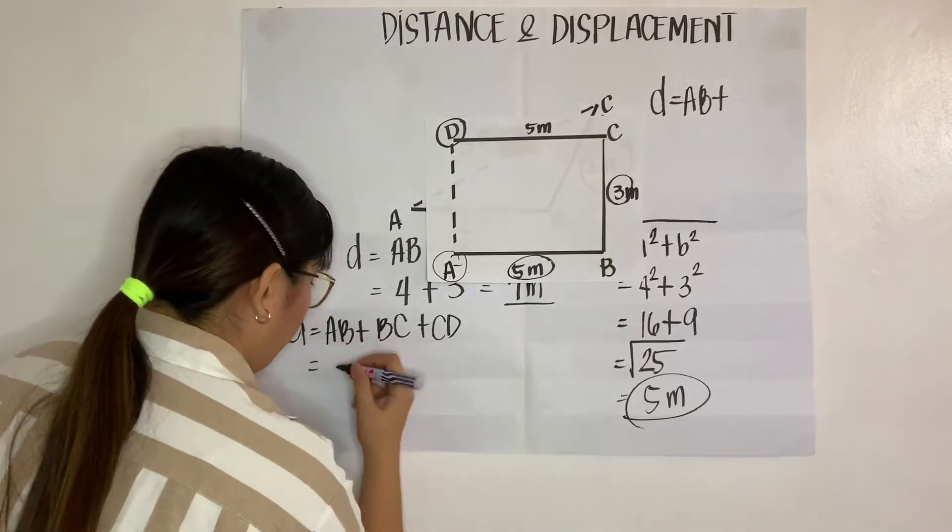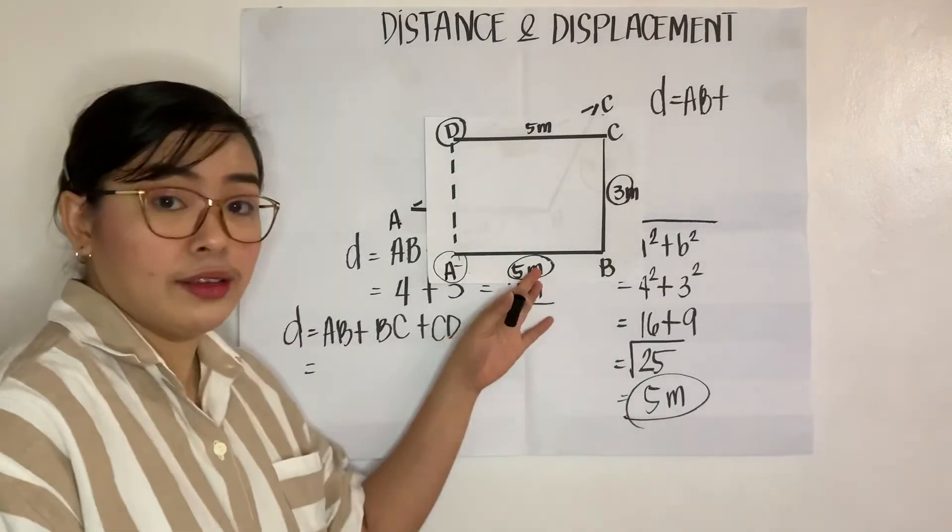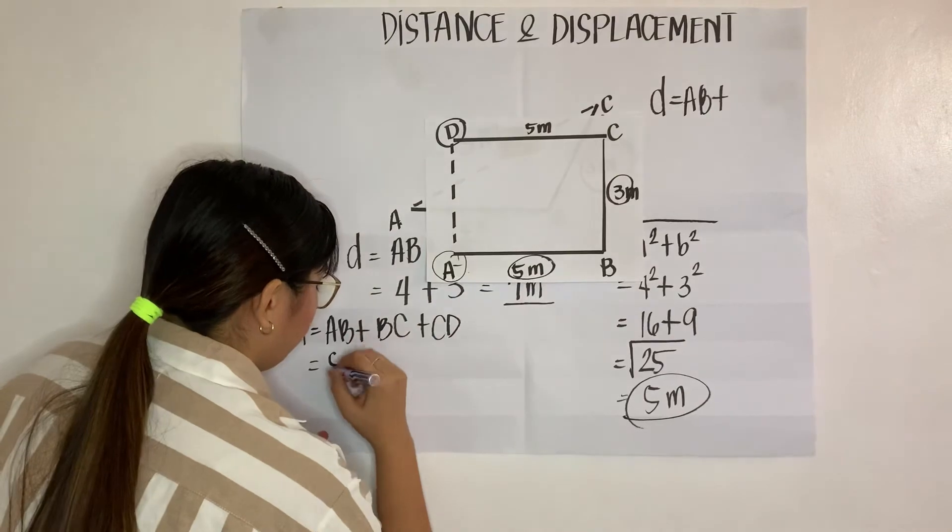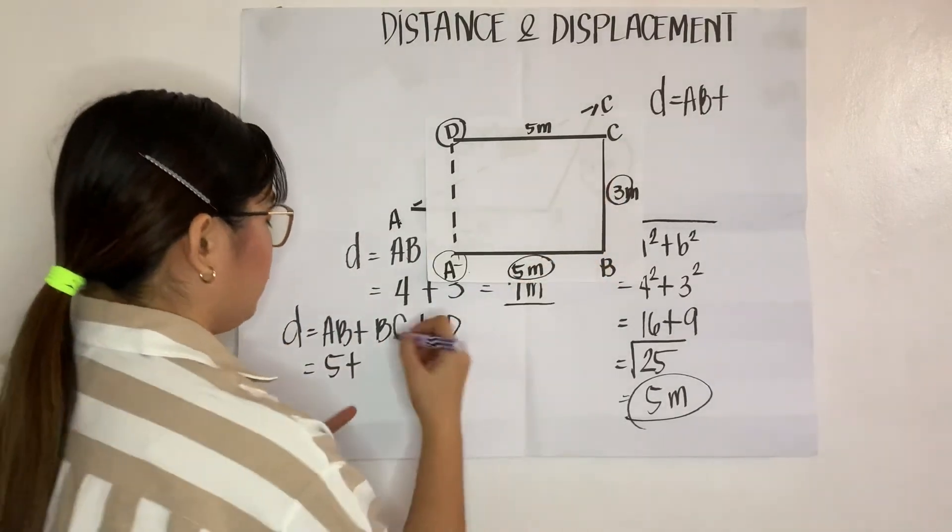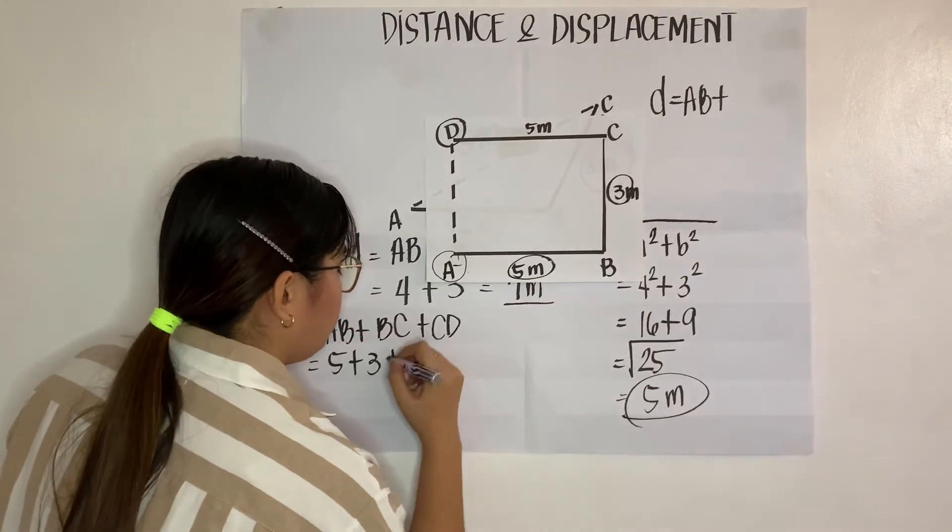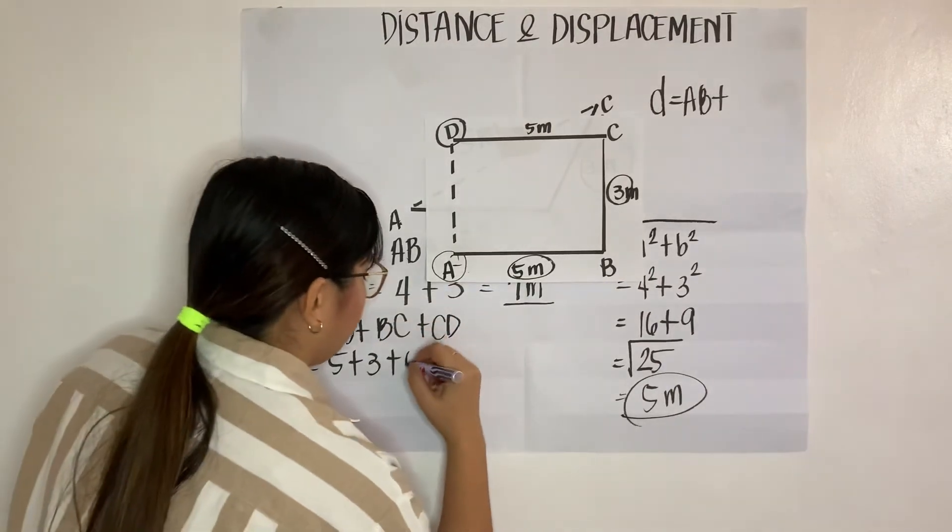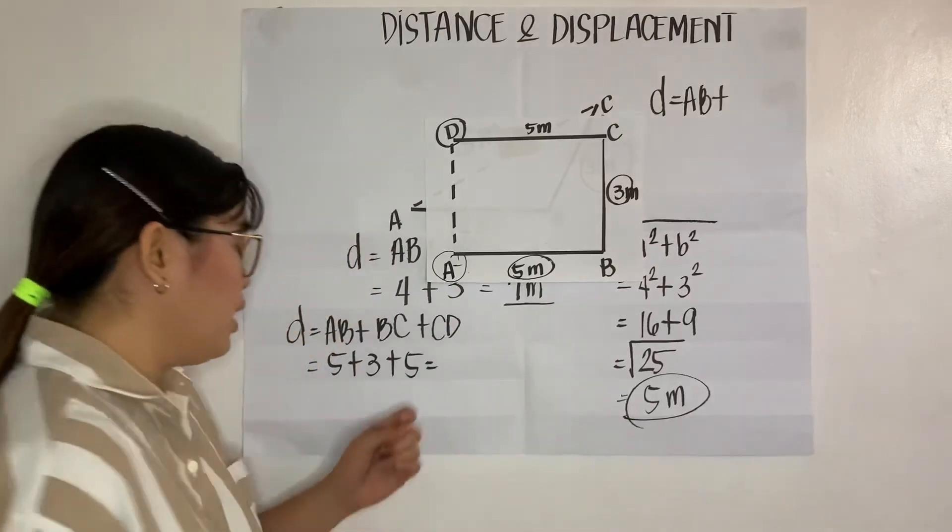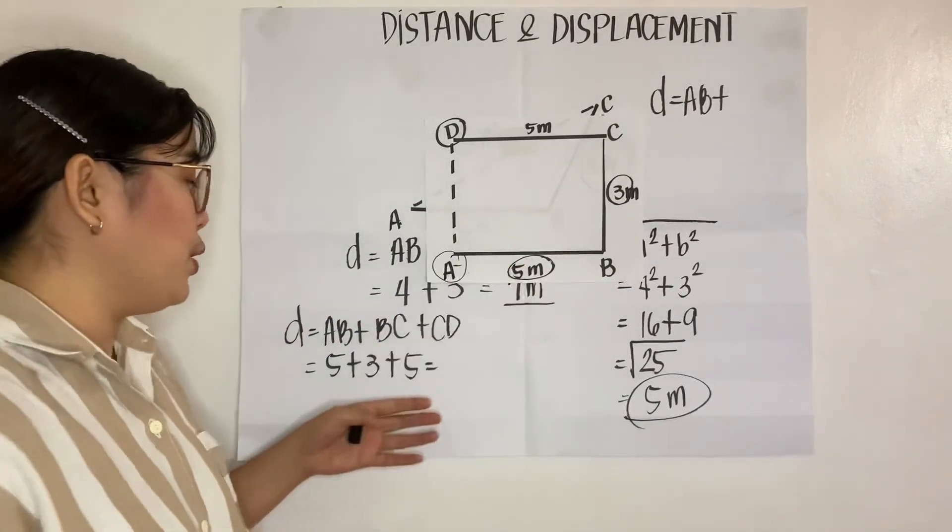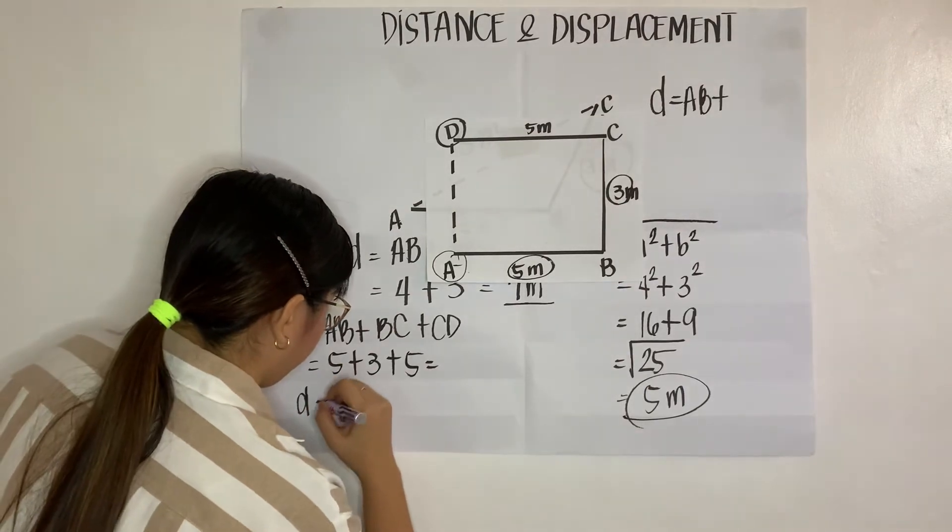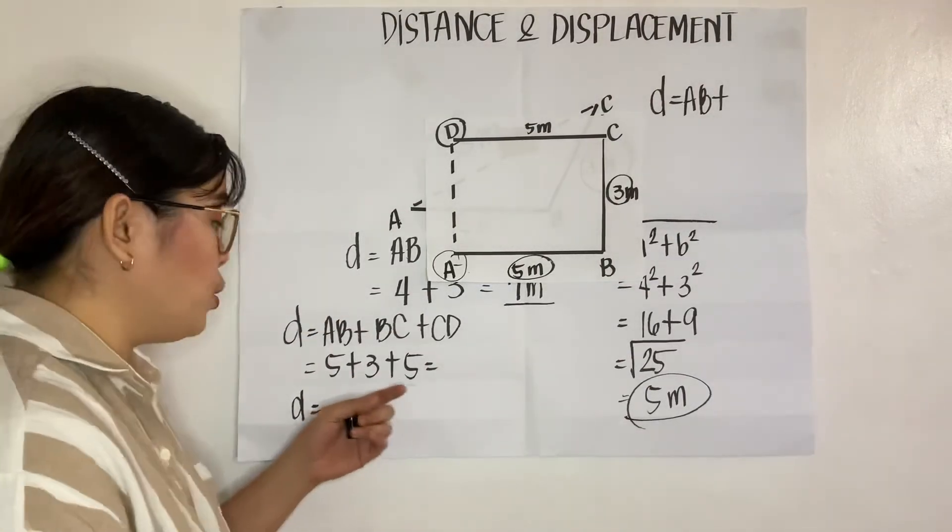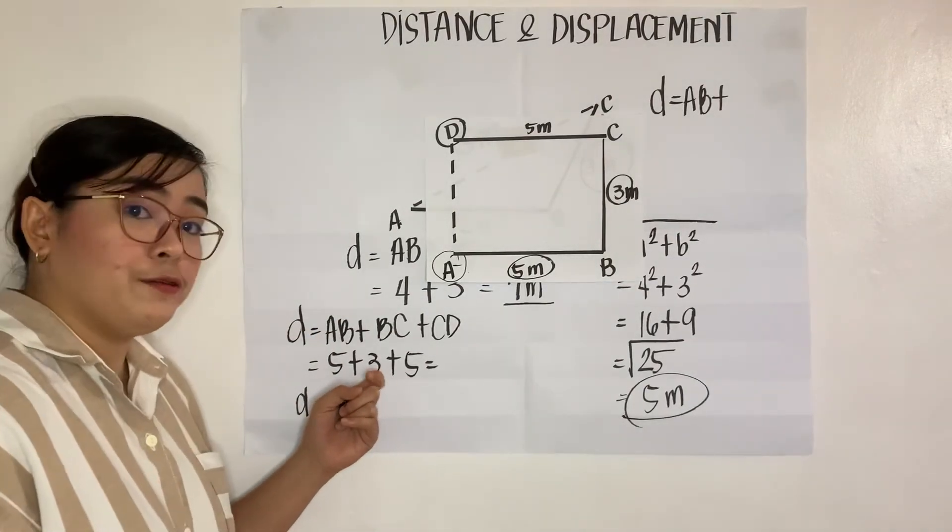Now, your AB will be 5 meters. 5 plus, and then your BC will be 3 meters. Plus, 5 meters. Then, the sum for this, our distance will be, our distance will be 5 plus 3 plus 5.